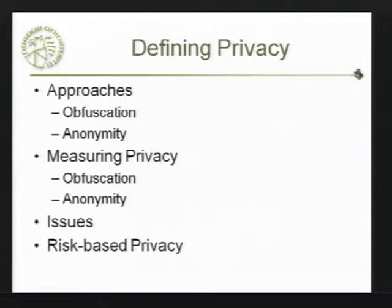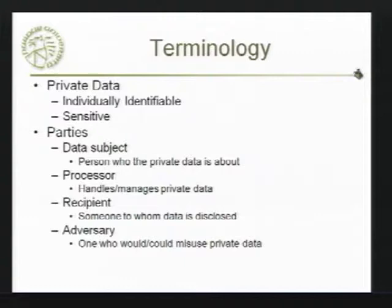Some terminology first. We talk about individually identifiable data, but we also often talk about sensitive data. There may be things that are individually identifiable that are not viewed as sensitive. For example, if you go to the Purdue directory, it's very easy to look up certain information about any student — that is individually identifiable data, but it's not viewed as sensitive. There are other things like your grades that even I as a faculty member can't get my hands on — that is sensitive.